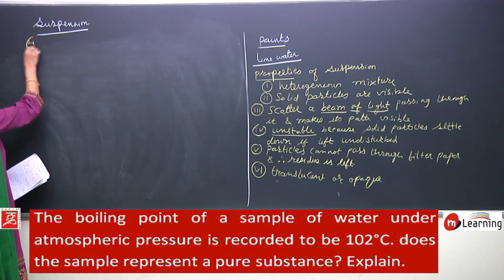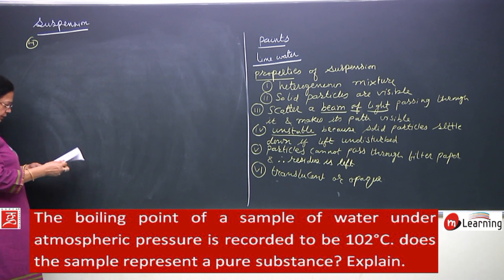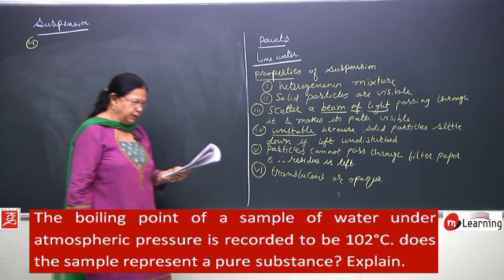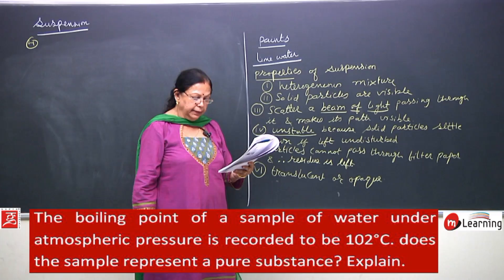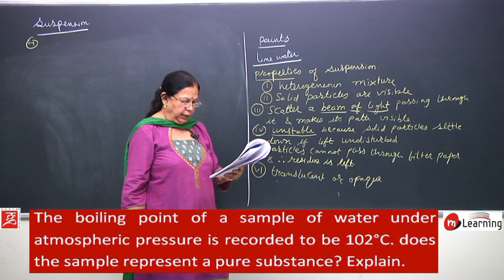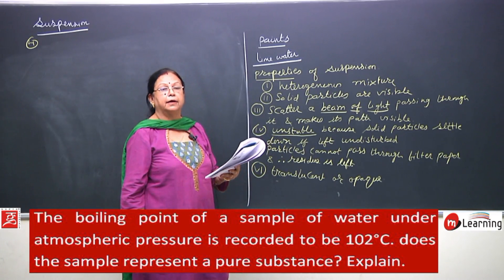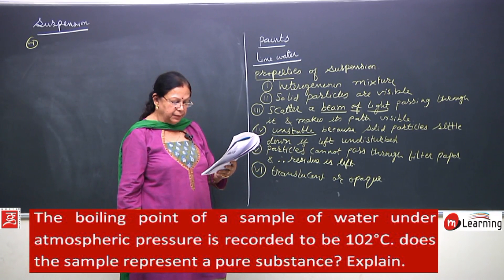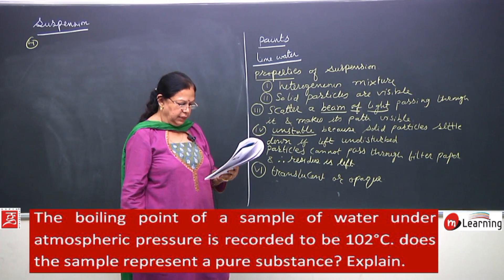Fourth problem in your study material: the boiling point of a sample of water under atmospheric pressure is recorded to be 102 degrees. Does that sample represent a pure substance? Explain.